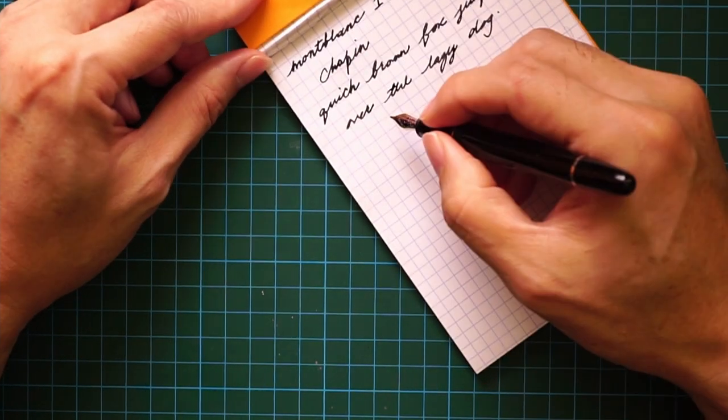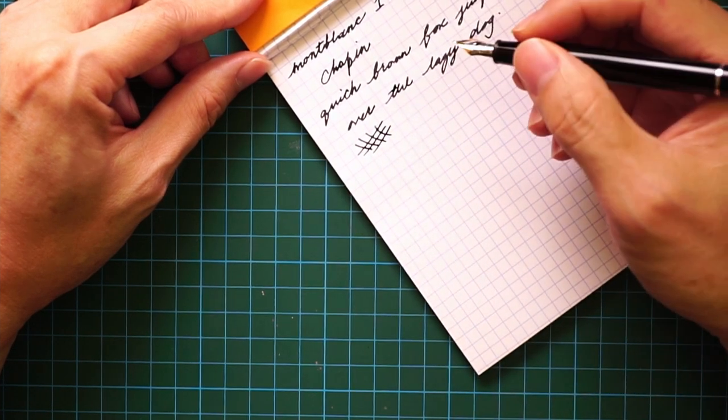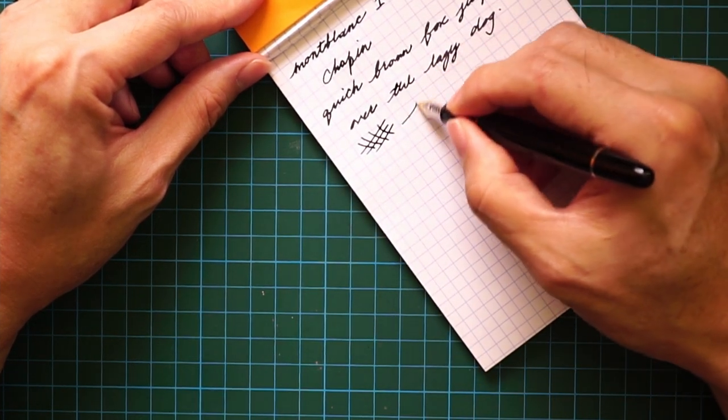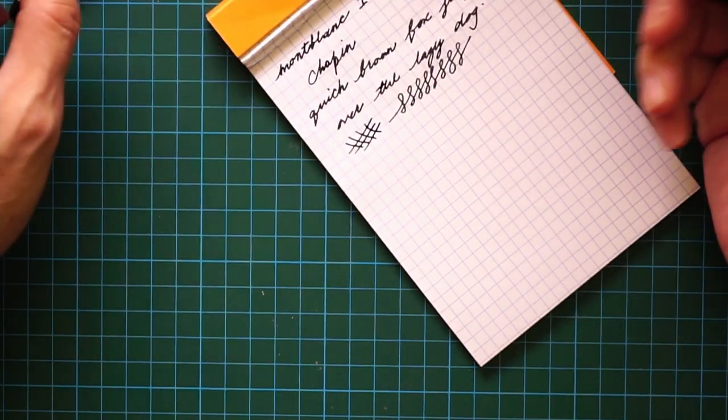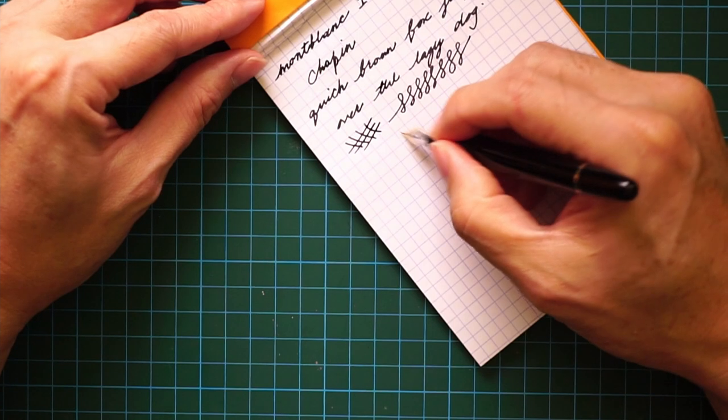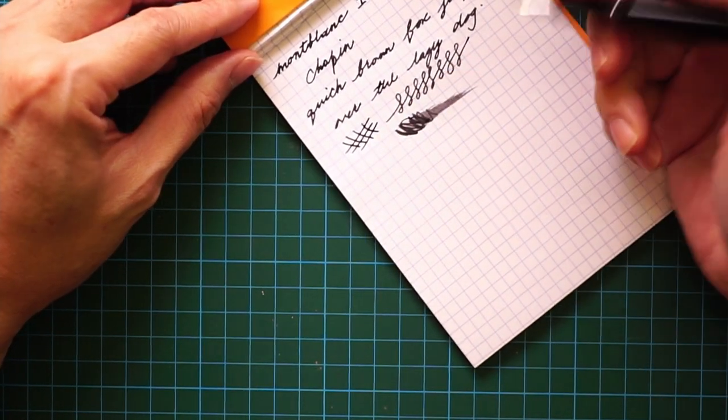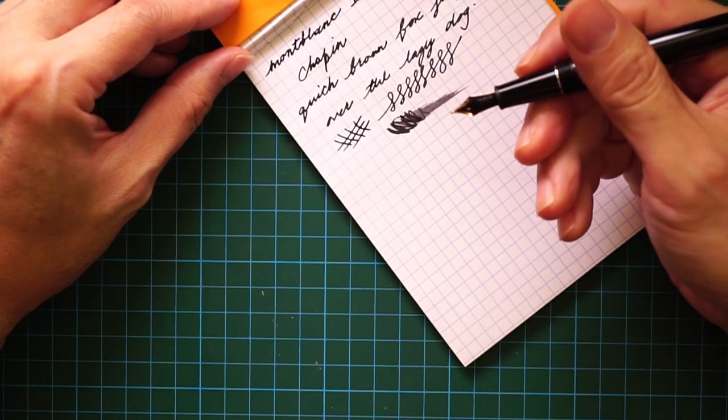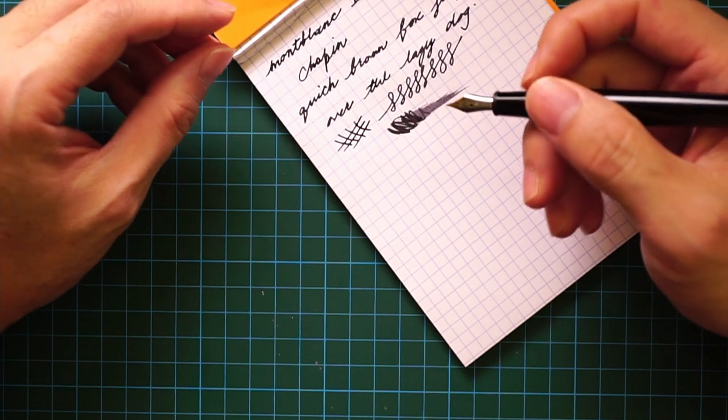So it's very smooth. It's almost buttery smooth or glass smooth, and it's very wet. Maybe it's a consequence of the ink, or maybe it's the nib, but it's a very wet writer. Definitely cannot use this with anything other than fountain pen friendly inks.